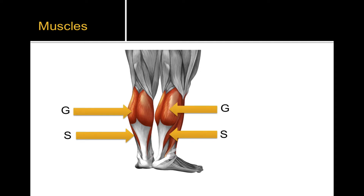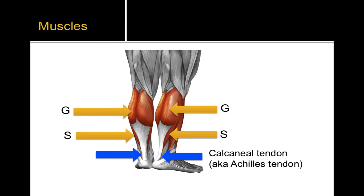So gastrocnemius and soleus — these muscle fibers converge onto a tendon called the calcaneal tendon. It's called that because the tendon attaches to the calcaneus, which is the bone of the heel, one of the tarsal bones.